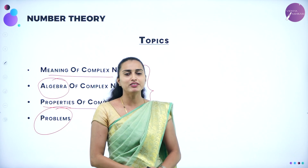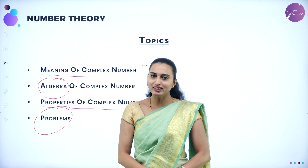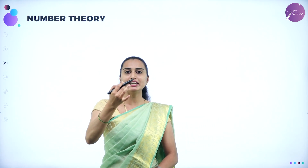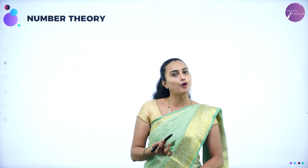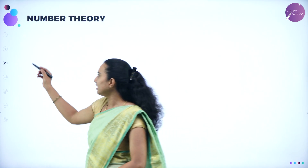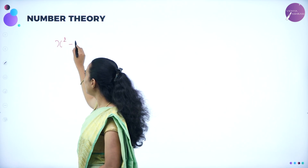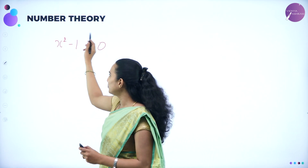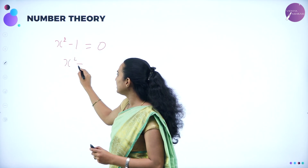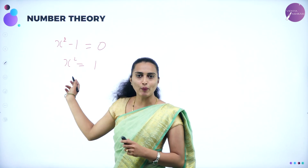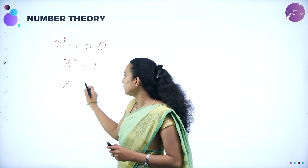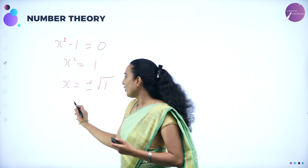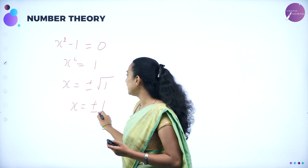Now I'm going to show you how complex numbers came into existence. I'm going to take an example. If you know already how to find the roots of a quadratic equation — a quadratic equation will have how many roots? Two roots. I'm going to take a quadratic equation like x squared minus one is equal to zero. If I take this, I can move the 1 to the other side: x squared equals one. Applying square root on both sides, x equals plus or minus square root of one, which is just one. So x equals either plus one or minus one.